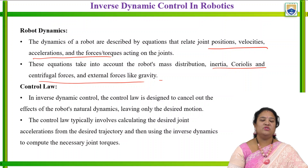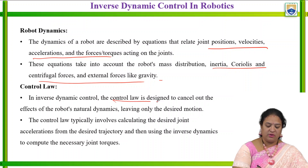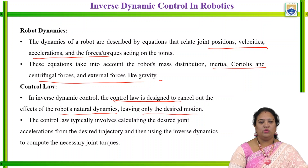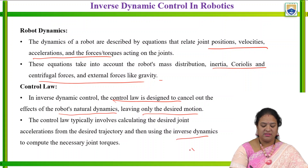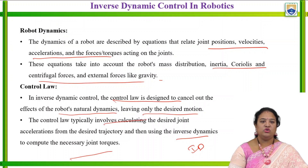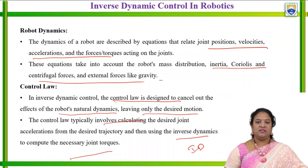The control law we will be considering in inverse dynamic control in robotics is that inverse dynamic control is used to cancel out the effects of the robot's natural dynamics, leaving only the desired motion. It also involves calculating the desired joint acceleration from the trajectory and then using the inverse dynamics to compute the necessary torque. This control law typically involves calculating the desired joint acceleration from the desired trajectory and then using inverse dynamics to compute the necessary joint torque.